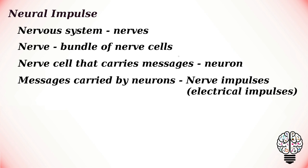The messages carried by neurons are called nerve impulses. A nerve impulse is nothing but an electrical impulse generated by neurons that allows them to rapidly signal throughout the body. Nerve impulses can travel very quickly because they are electrical impulses. Think about flipping on a light switch when you enter a room.